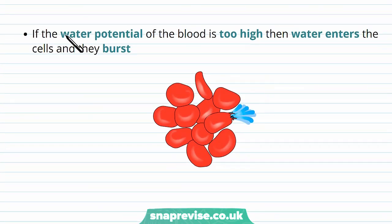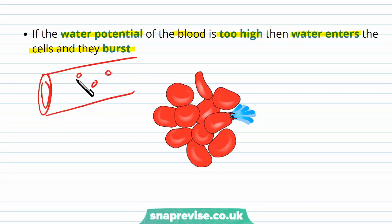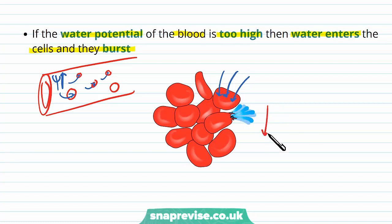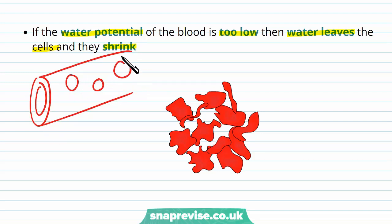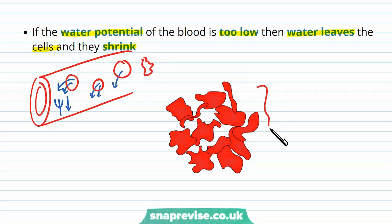If the water potential in the blood is too high, water enters the cells and they burst. Imagine a blood vessel with red blood cells — if the water potential is too high, water moves from an area where it's very watery to an area with less water, moving into the blood cells, causing them to swell up and burst open. This kills the cells and reduces the number of red blood cells we have. Conversely, if the water potential of the blood is too low, water leaves the cells and they shrink. Water moves from inside the cells to outside, causing them to change shape, reducing their function and oxygen-carrying capacity.